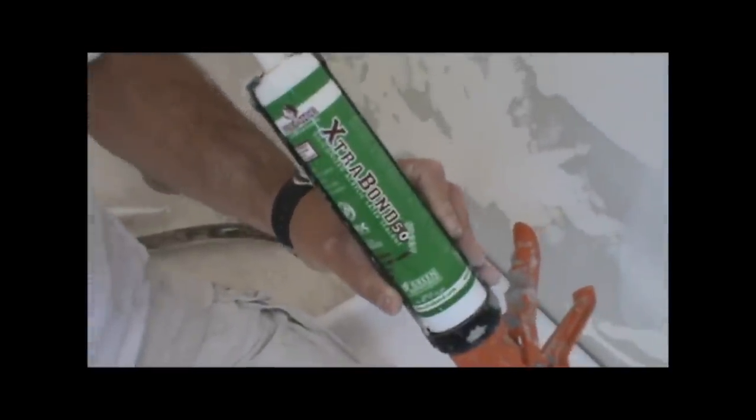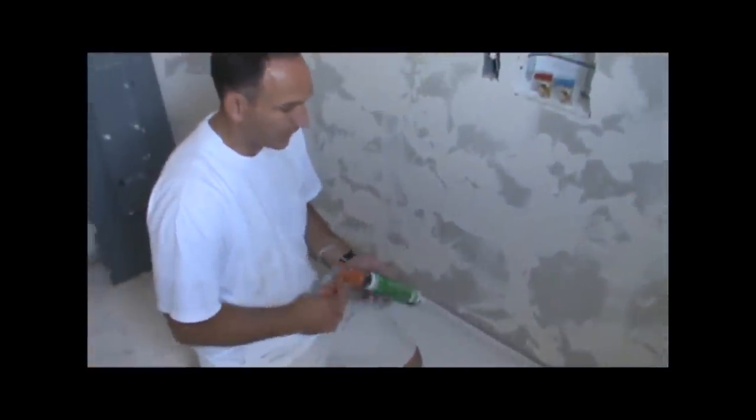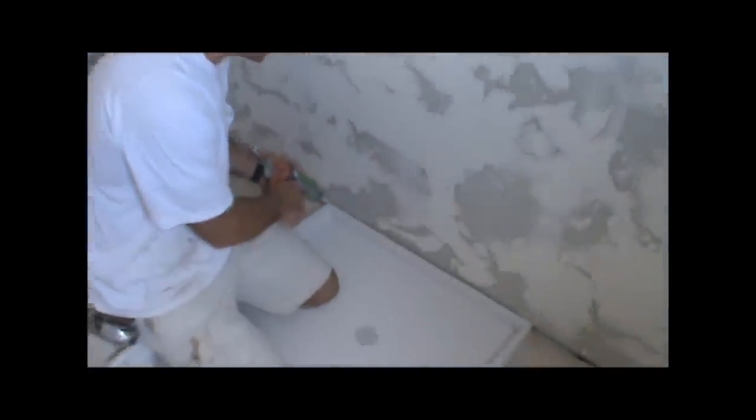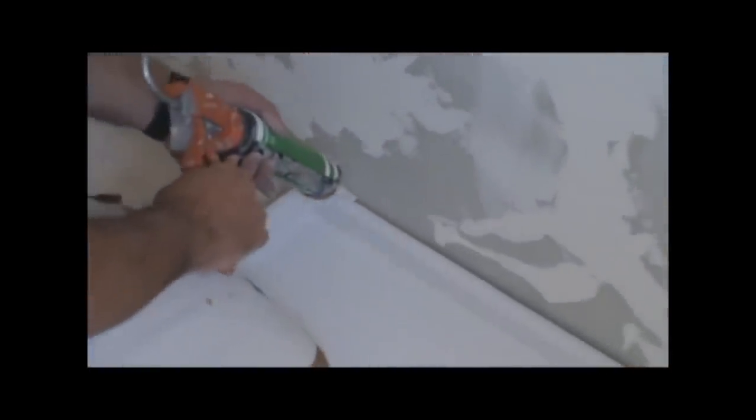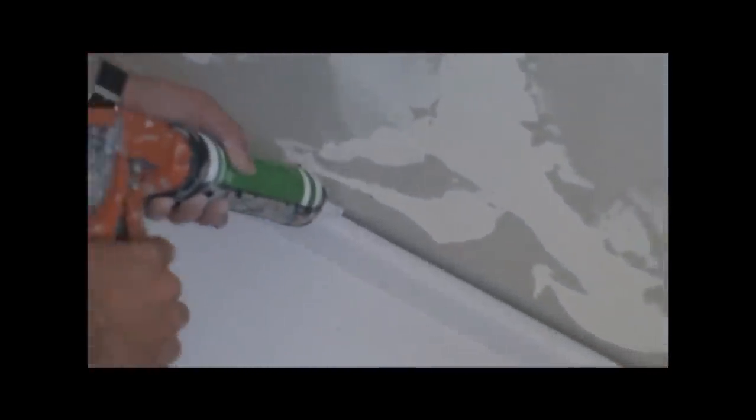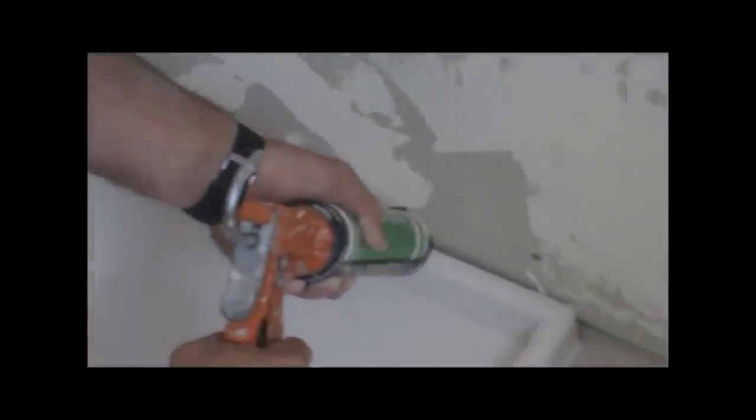This is the Extra Bond 50. It's paintable, so I like to always use it against the drywall side so in case people want to paint. I just make sure it's all caulked in nice. And then that's your washer pan.